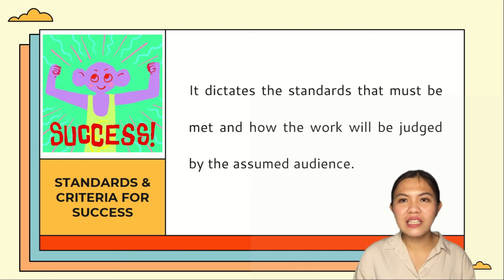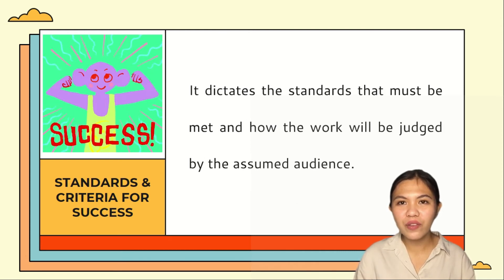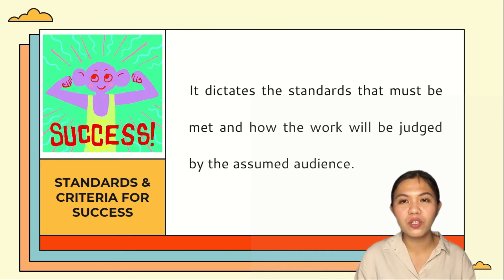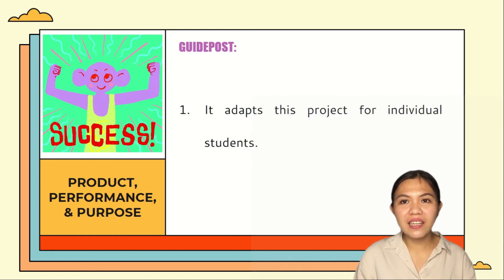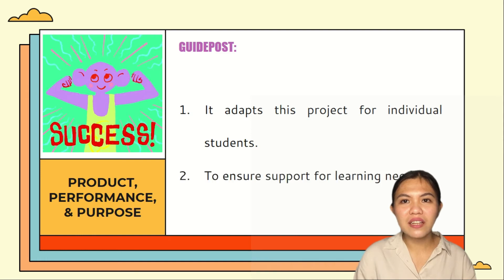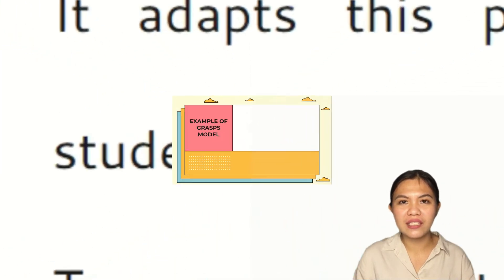Standards and criteria for success dictates the standards that must be met and how the work will be judged by the assumed audience. As a guidepost, it adapts the project for individual students and ensures support for their learning needs.